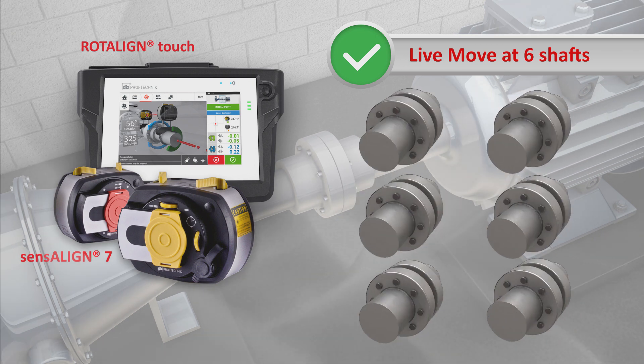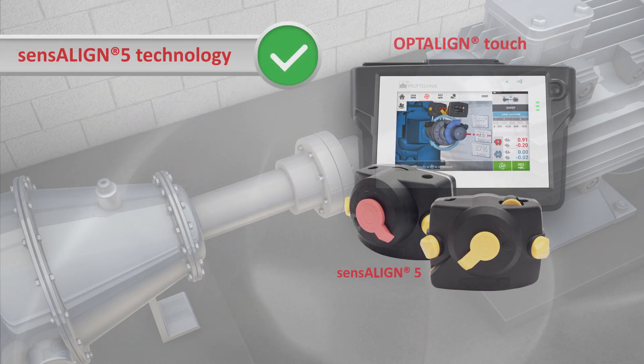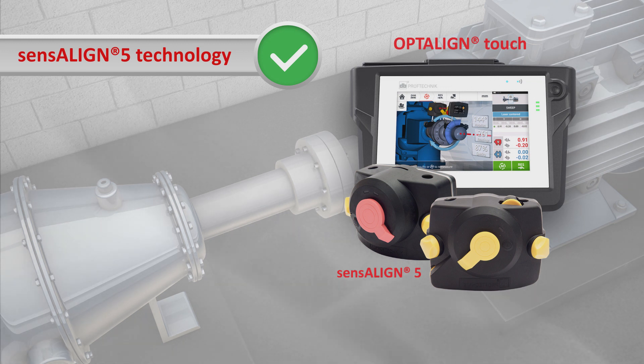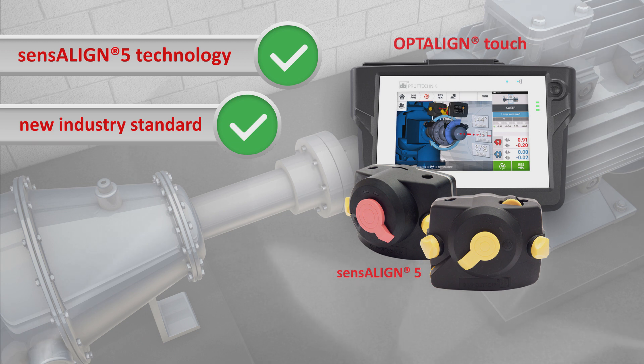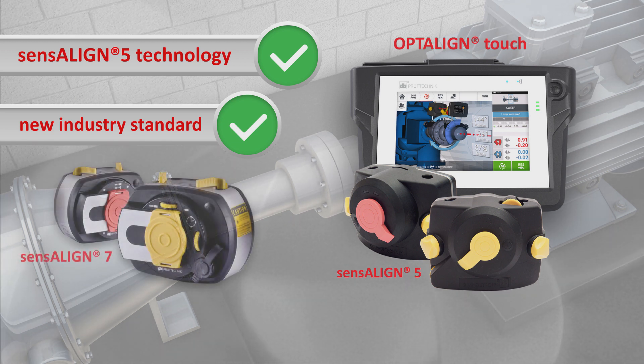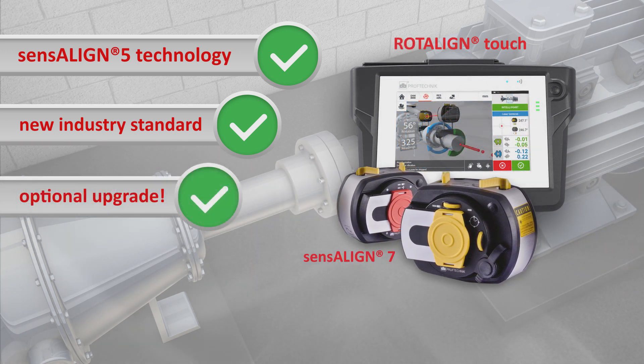OPTALINE touch is equipped with the powerful SensALIGN 5 laser sensor technology. This alignment device is the latest standard in every maintenance workshop. It can be easily upgraded with a SensALIGN 7 laser sensor unit for full access to Pruftechnik intelligent alignment features, including alignment of vertical machines and extended cardan shaft features.